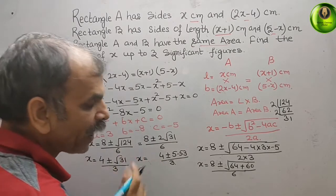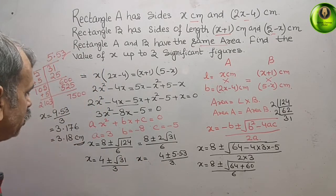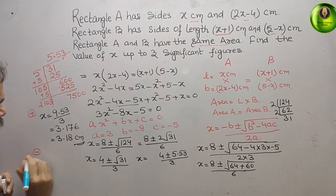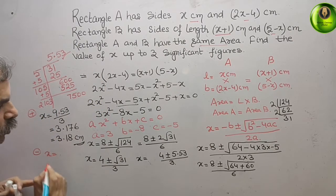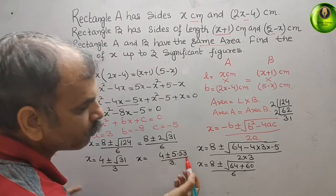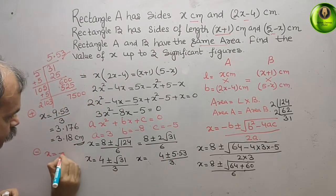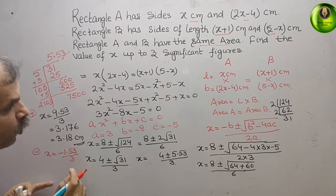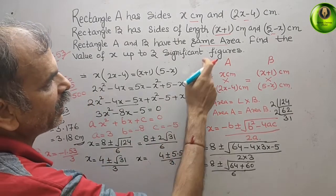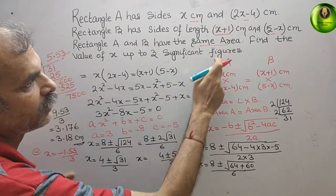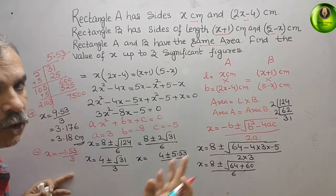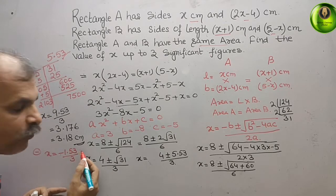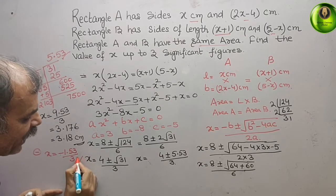If we take the minus sign, x equals 4 minus 5.53 equals minus 1.53, divided by 3, which gives a negative value. Since this is a rectangle, it cannot have a negative length. Therefore, the negative solution is neglected. Our answer is x equals 3.18 centimeters.